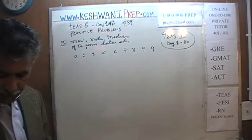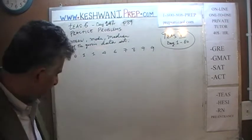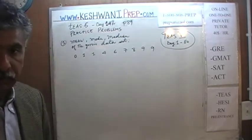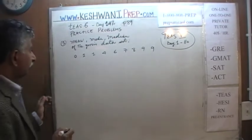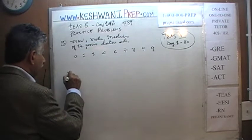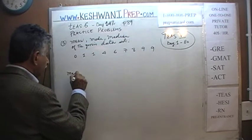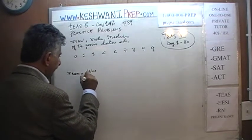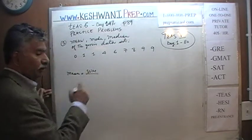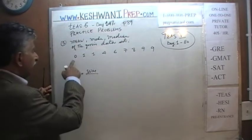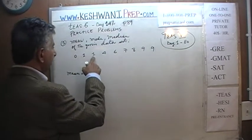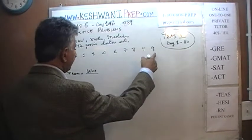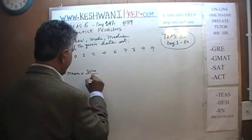Let's first find the mean. To find the mean, we have to first find the sum and then divide by however many values we have. Counting: 1, 2, 3, 4, 5, 6, 7, 8, 9 — there are 9 of them.